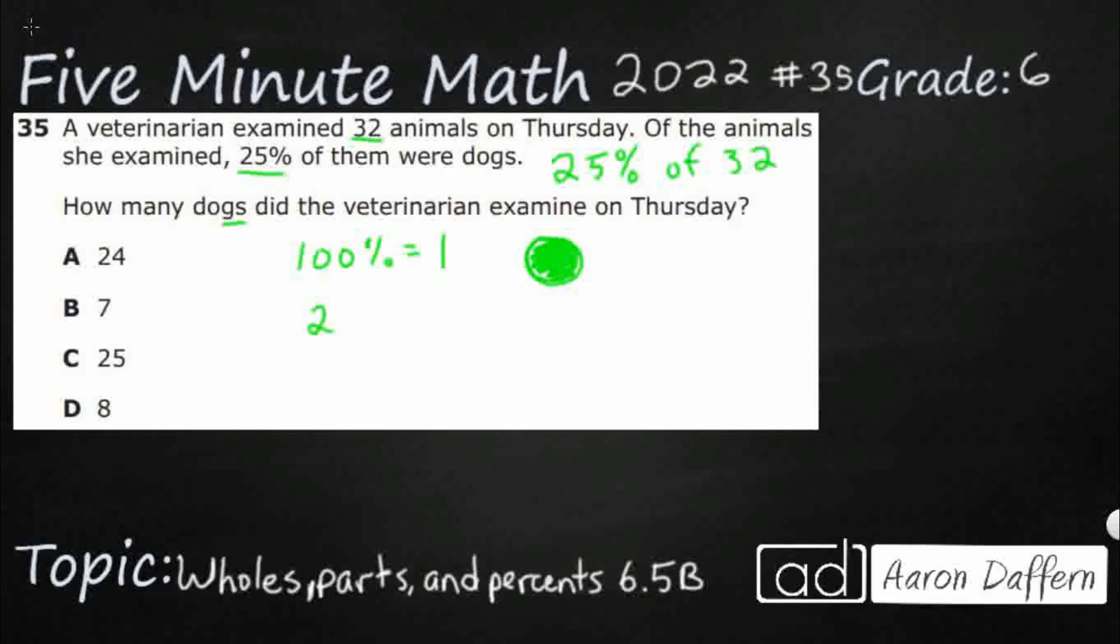So if I do 25%, here's an easy way to kind of keep track of percents. You can always change any percent into a fraction over 100, because 100% is the whole thing. So if there's 100 parts, that's your denominator. So 25 out of 100. So 25 out of 100 or 25 hundredths is going to be the same as my 25%. Now, if I wanted to kind of reduce this, I can simplify this, because I know 25 goes into both of those.